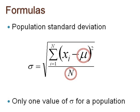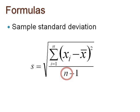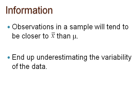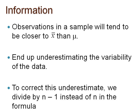If this is the case, we calculate S using the sample size little n and the sample mean x-bar in its calculation. Since we are estimating mu with x-bar in the process of calculating S, it is known that the observations in a sample will tend to be closer to x-bar than mu, and we end up underestimating the variability of the data. To correct this underestimate, we divide by n minus 1 instead of n in the formula.